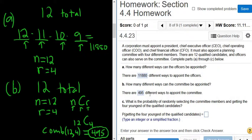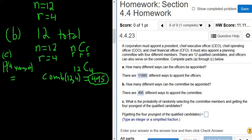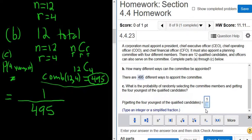What is the probability of randomly selecting the committee members and getting the 4 youngest? All right, part C. So you want the 4 youngest. So the probability of getting the 4 youngest, right down here, is a fraction. Well, there's 495 ways to pick 4 people from a group of 12. We know that because of this. And there's one way to pick the 4 youngest. You pick the 4 youngest. So it's 1 over 495.